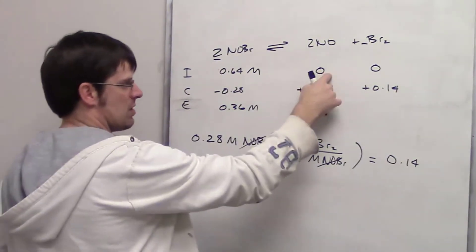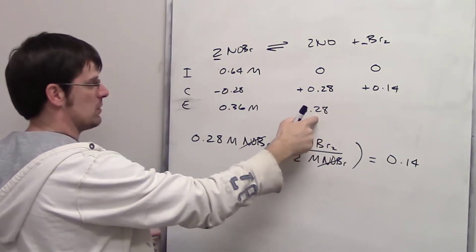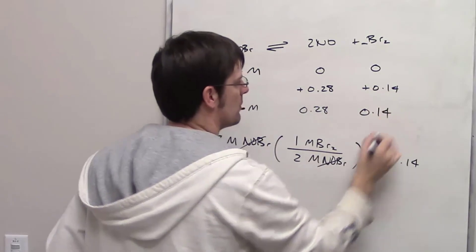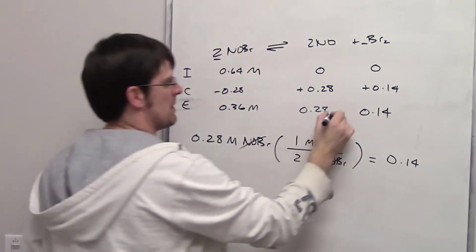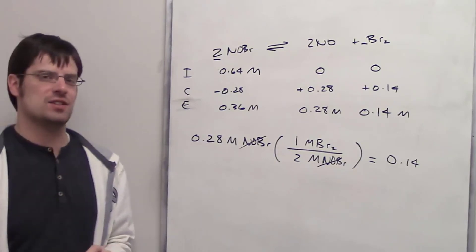Taking 0 and adding 0.28 gives 0.28 molar as the final equilibrium concentration for NO. For bromine, 0 plus 0.14 equals 0.14 molar at equilibrium. That's the answer.